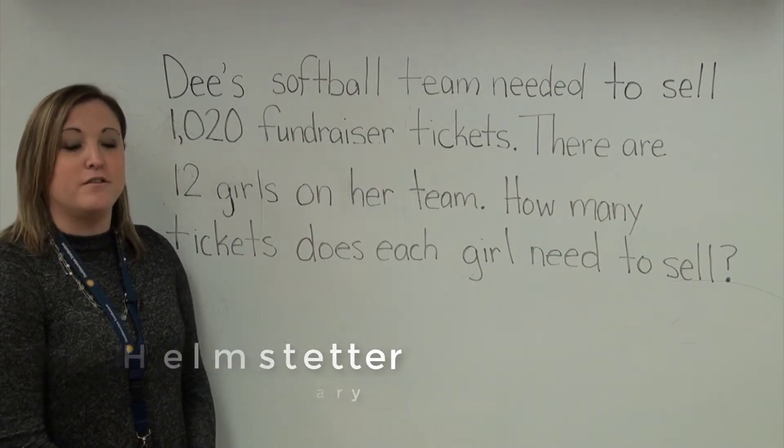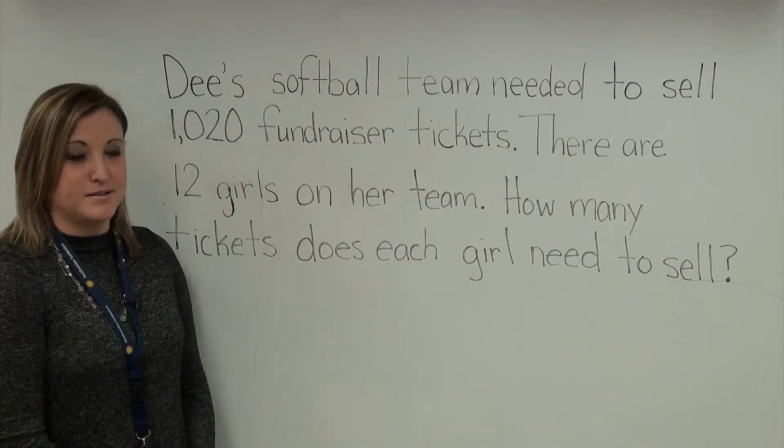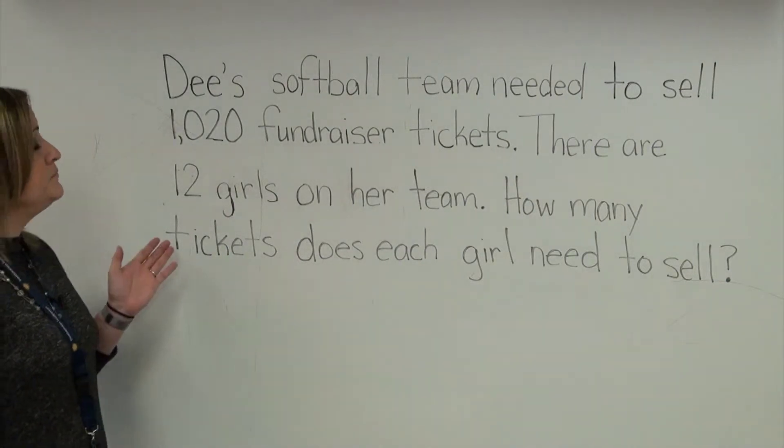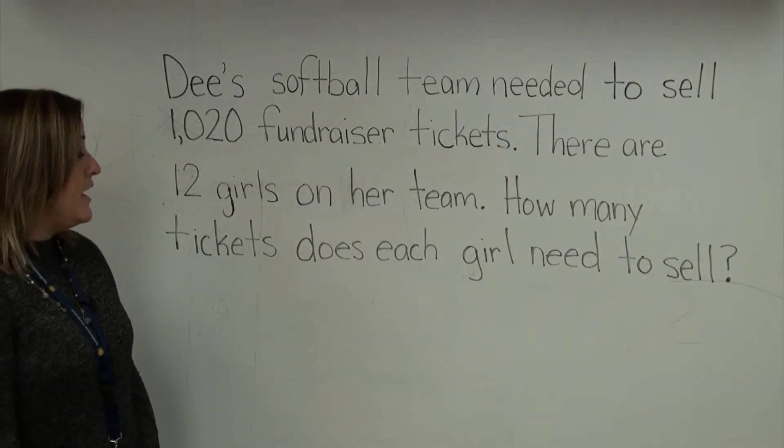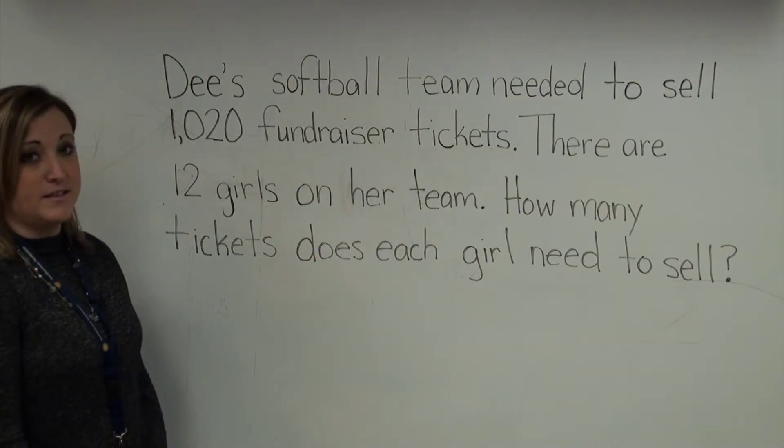Today, I'm going to model division of whole numbers using place value blocks. For today's problem, Dee's softball team needed to sell 1,020 fundraiser tickets. There are 12 girls on her team. How many tickets does each girl need to sell?